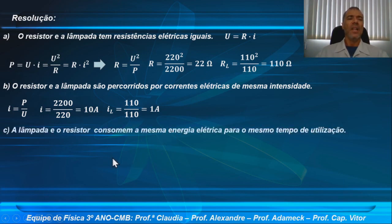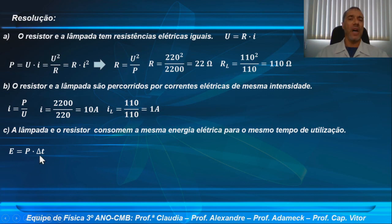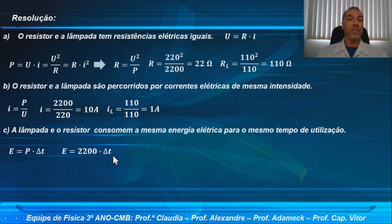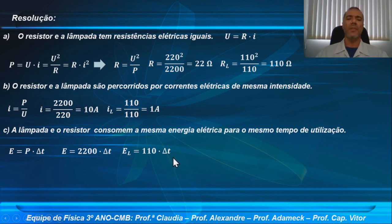Letra C: a lâmpada e o resistor consomem a mesma energia elétrica para o mesmo tempo de utilização. Energia igual a potência vezes o intervalo de tempo ΔT. A energia dissipada pelo resistor: 2200 watts vezes ΔT. A energia da lâmpada: 110 watts vezes ΔT. Quem consome mais energia? O resistor. Então a letra C está errada; eles não consomem a mesma energia elétrica.